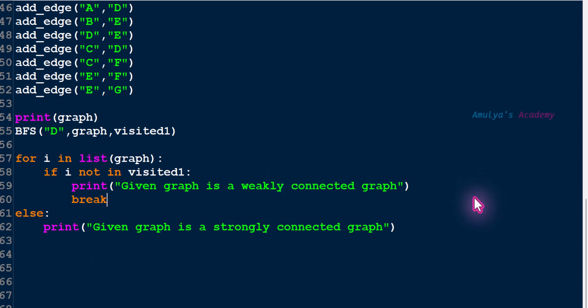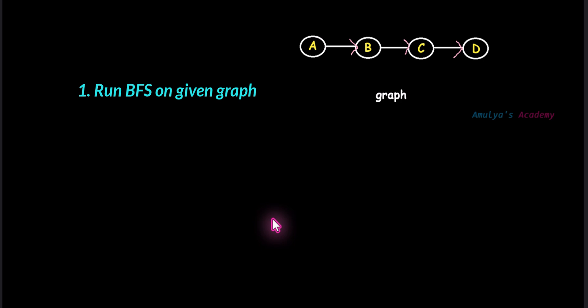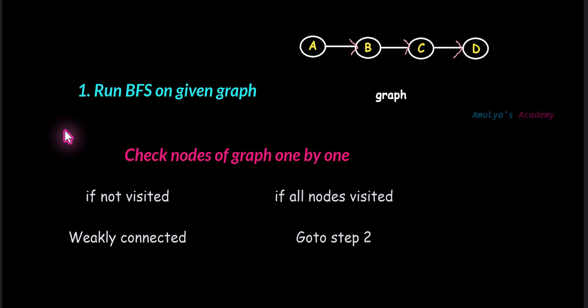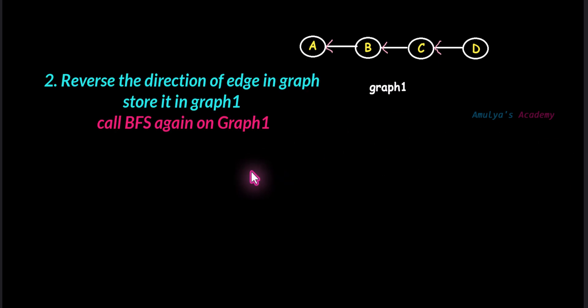So we need to change that logic. Let's see how to find whether the given directed graph is strongly connected or weakly connected using BFS algorithm. The first step: run BFS algorithm on the given graph. After completing the traversal, in the visited set you will get all the visited nodes. Now check each node of the graph one by one and see whether that node is visited or not. If any node is not visited, that means it is a weakly connected graph. But if all the nodes are visited, go to the next step — reverse the direction of all the edges present in the graph.